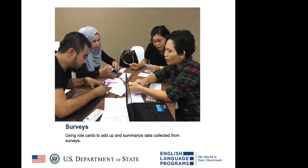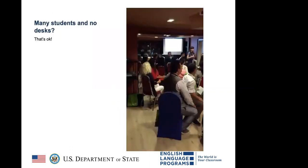Each role really requires the students to actively participate. The roles may require different levels of English speaking, listening, or writing ability — but that's the point of the activity. You can see here from a workshop photo that everyone's actively participating because everybody has a role. In this activity they were doing surveys, adding up data and summarizing it using their specific roles — one writer, someone keeping the time, et cetera. Role cards work even when you don't have any desks.